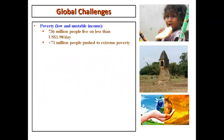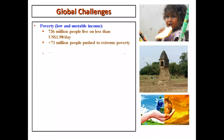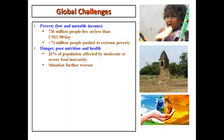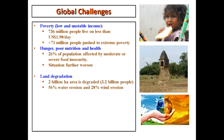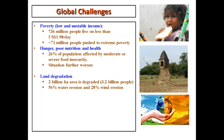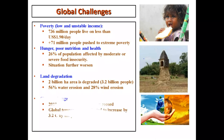Land degradation and climate change are major global challenges. About 700 to 760 million people are living on less than $1.90 per day, and this year 71 million people have been pushed into extreme poverty due to the COVID pandemic. Regarding hunger, poor nutrition and health — 60% of the population is affected by moderate or severe food insecurity, and this situation has further worsened due to COVID. Land degradation is one of the most serious problems globally, with about 2 billion hectares of land under different kinds of degradation.